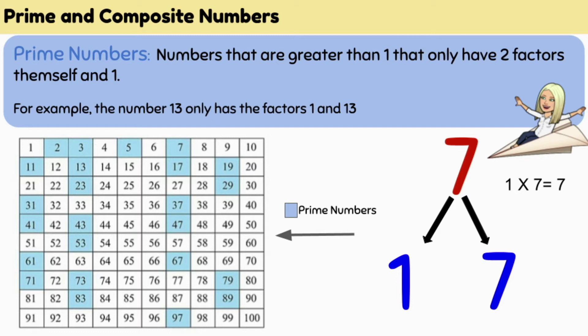For example, the number seven only has the factors one and seven. It can only be divided evenly by seven or one. One and seven are the only numbers that we can multiply to give the answer seven. Therefore, seven is a prime number.